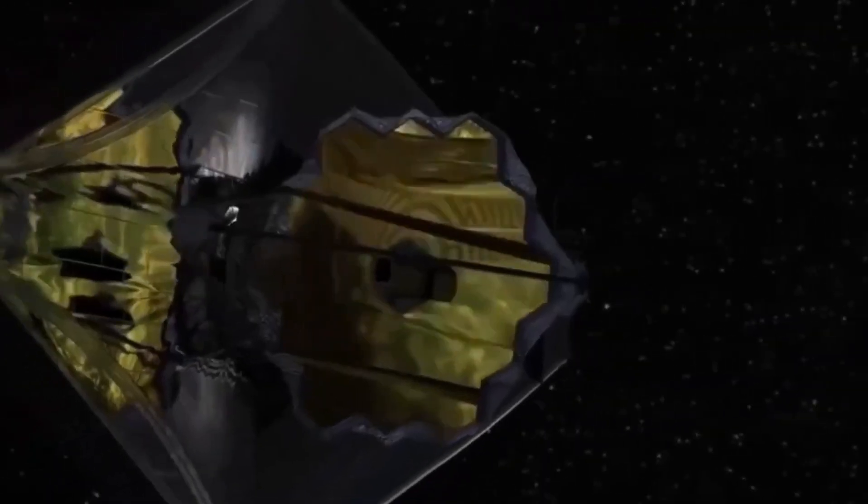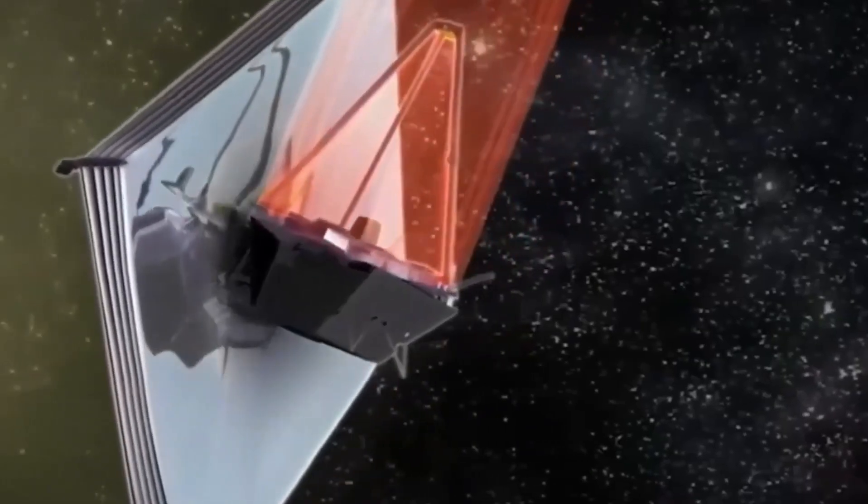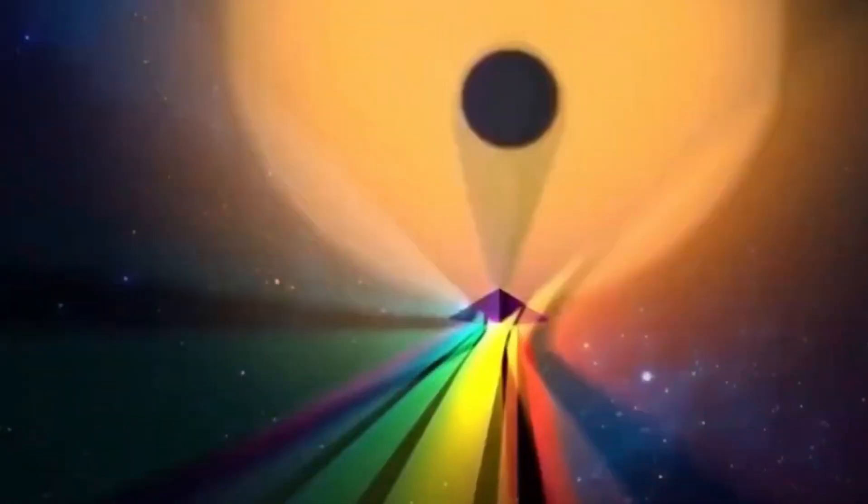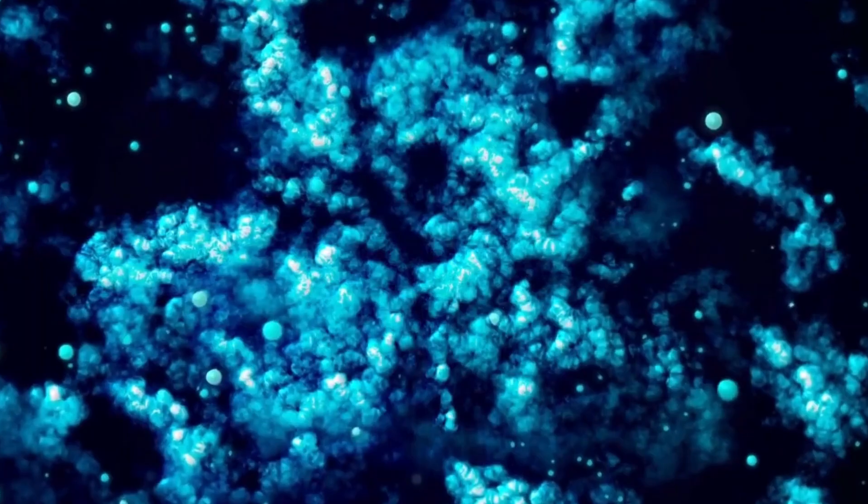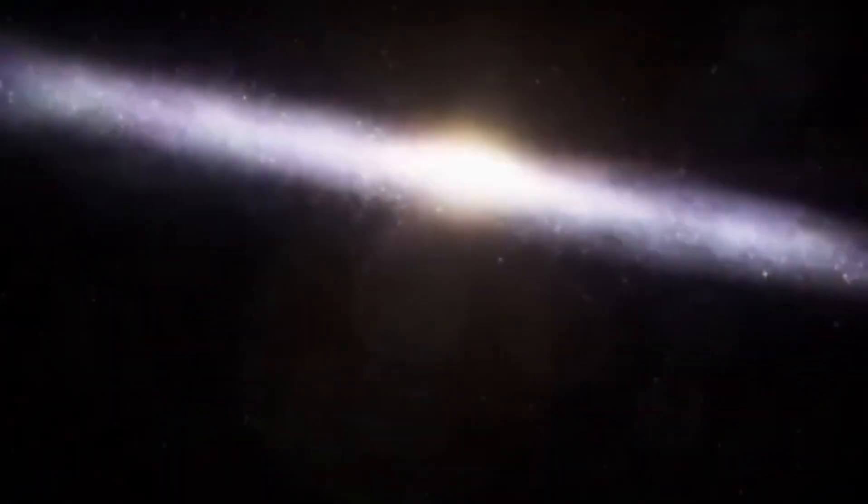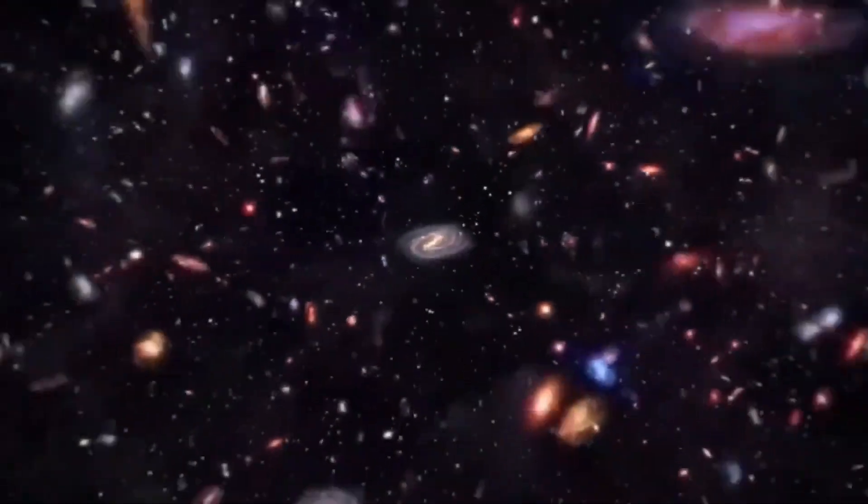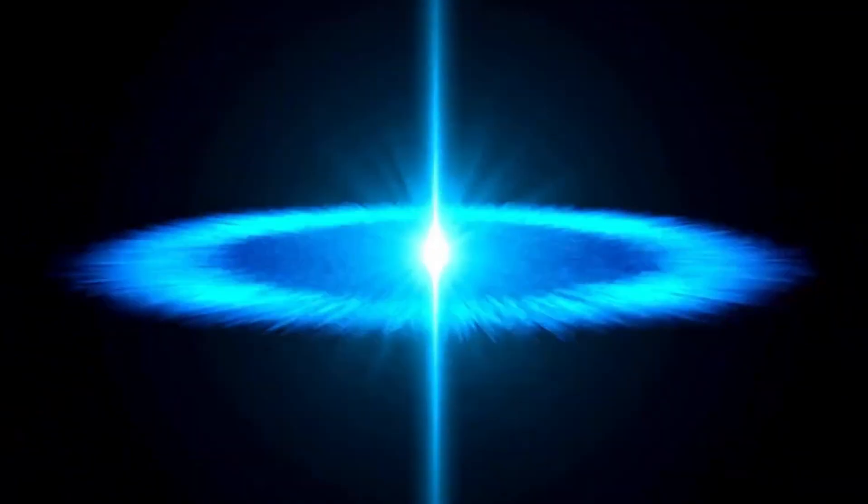When the James Webb turned its instruments toward the iconic pillars of creation, it captured the famous dust clouds in incredible detail. These pillars are located in the constellation Serpens, about 7,000 light-years away from Earth. The pillars of creation are part of the Eagle Nebula, large clouds of gas and dust that were first photographed by the Hubble Space Telescope in 1995.